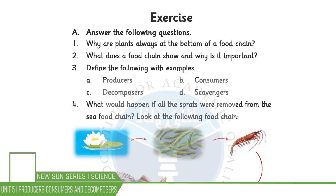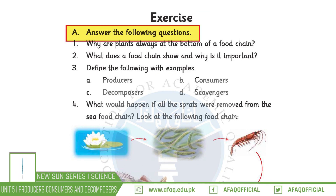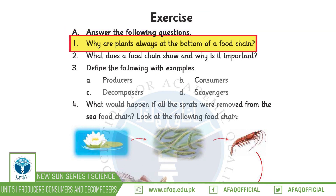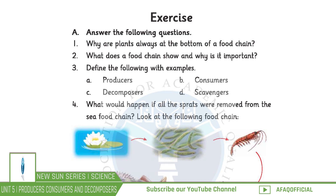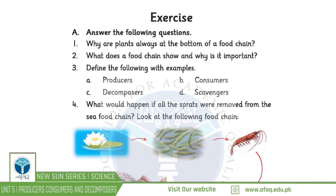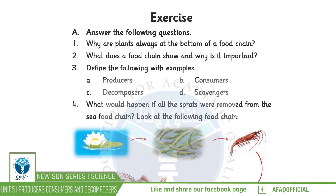Page number 32. Answer the following questions. Question number 1: Why are plants always at the bottom of a food chain? Plants are a source of energy for animals and human beings, because they can make their own food using sunlight. For this reason they are placed at the bottom of the food chain.